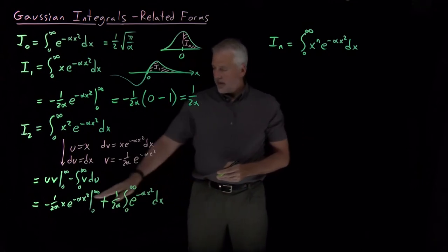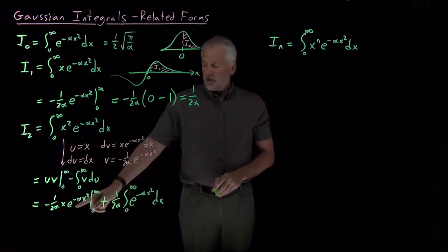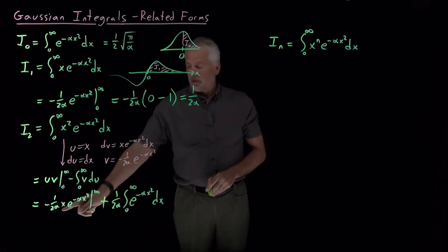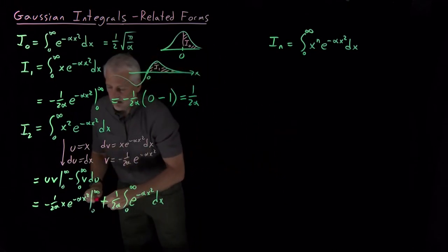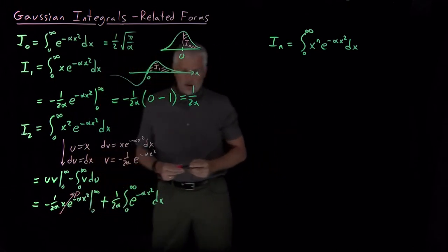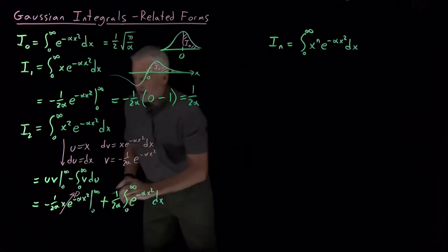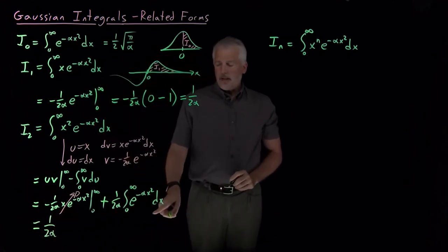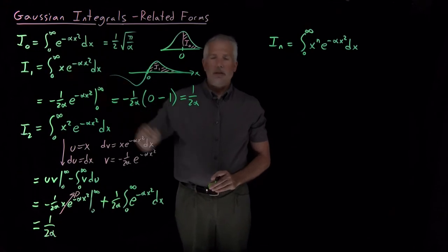And now we can do both of these pieces. Regardless of whether I plug in an infinity, which dies, becomes 0 because of the Gaussian portion. E to the -∞² is 0. Or whether I plug in a 0, when x equals 0, the polynomial portion, the x, causes this thing to disappear. So this first term, both of the terms are 0, and that difference goes away entirely. For the second term, I have 1/(2α) times the integral of a Gaussian from 0 to infinity. But we know a name for that. The integral of a Gaussian from 0 to infinity is exactly the I₀ that we started with.